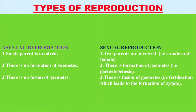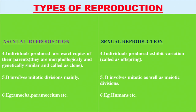In asexual reproduction there is no fusion of gametes, but in sexual reproduction there is fusion of gametes, that is fertilization is present, which leads to the formation of a zygote. In asexual reproduction, individuals produced are exact copies of their parents — morphologically and genetically similar — and are called clones, but in sexual reproduction individuals produced exhibit variation and are called offspring.